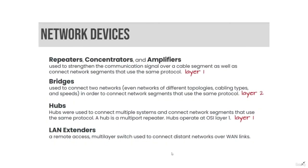Other common network devices include repeaters, concentrators, amplifiers, bridges, hubs, and LAN extenders. Repeaters, concentrators, and amplifiers are used to strengthen the communication signal over a cable segment and connect network segments that use the same protocol — all operating at Layer 1. Bridges connect two networks, even networks of different topologies, cabling types, and speeds, operating at Layer 2. Hubs, which are multi-port repeaters, connect multiple systems and operate at OSI Layer 1. LAN extenders are remote-access multi-layer switches used to connect distant networks over a WAN link.